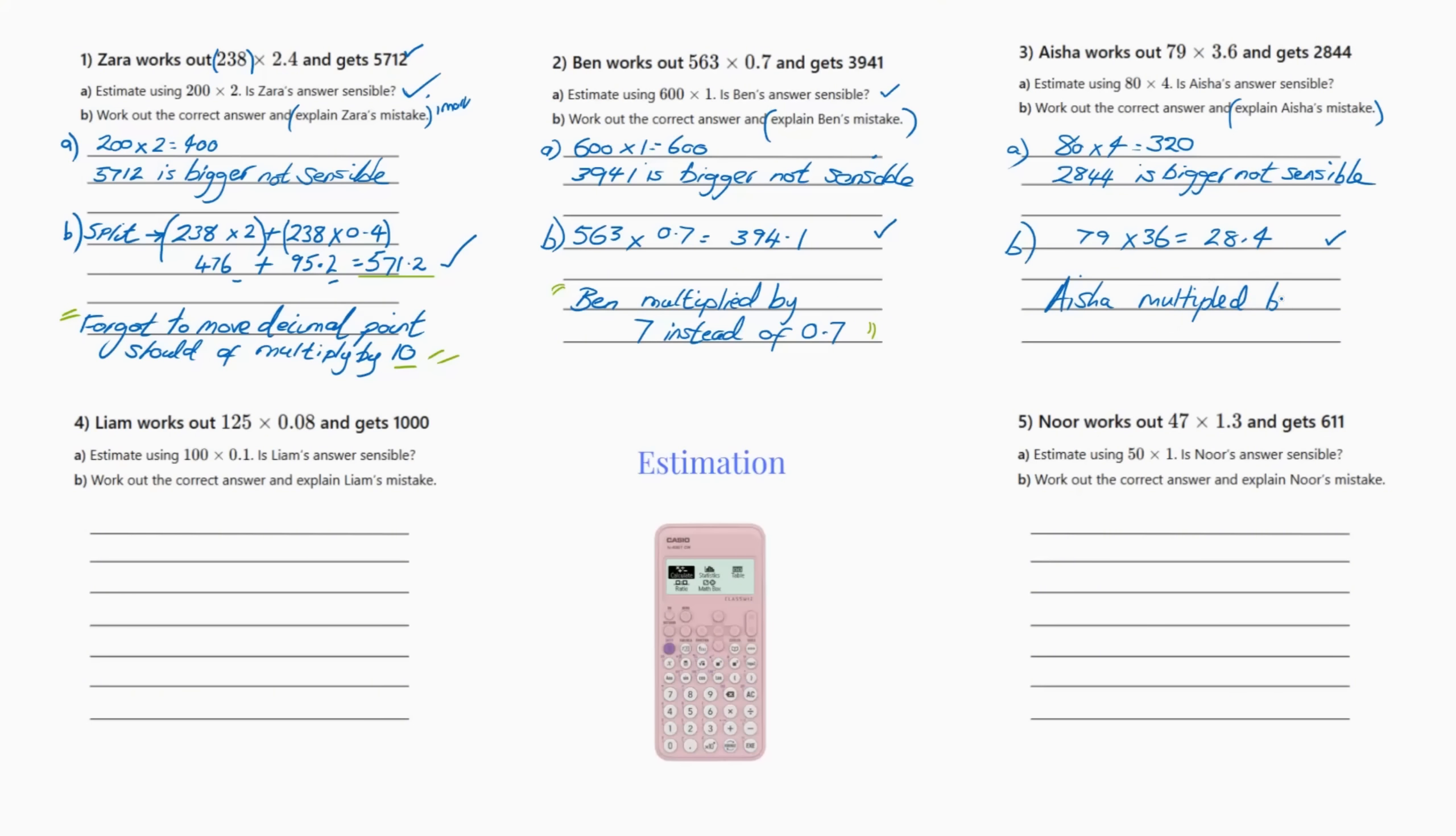By 36 instead of 3.6, and that's why her number was so big. So this one asks Liam works out 125 times 0.08 and gets a thousand. He's done an estimate using 100 times 0.1.